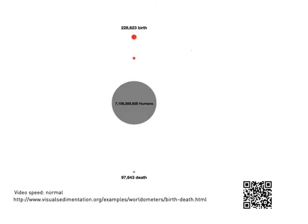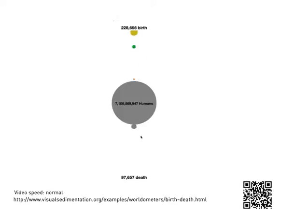How can we visualize human births and deaths in real time? Tokens dropping from the top represent individual births, the circle in the middle represents everyone who is alive, and tokens falling to the bottom represent individual deaths.